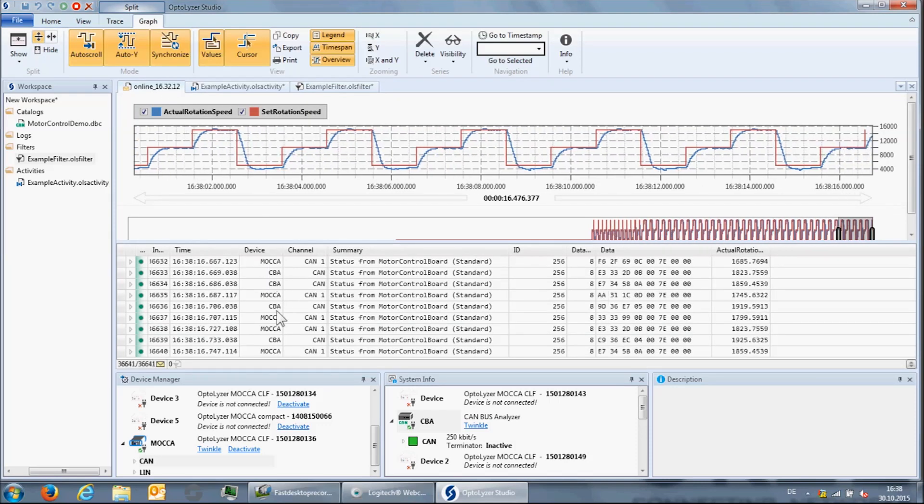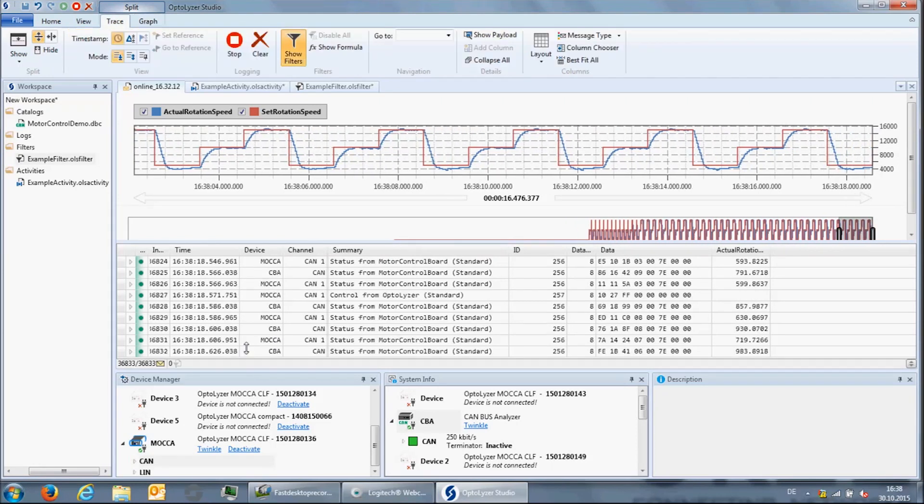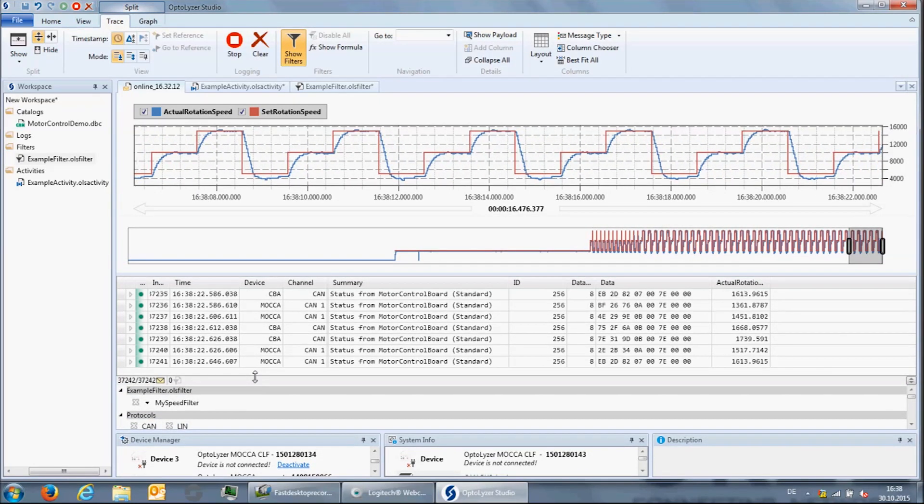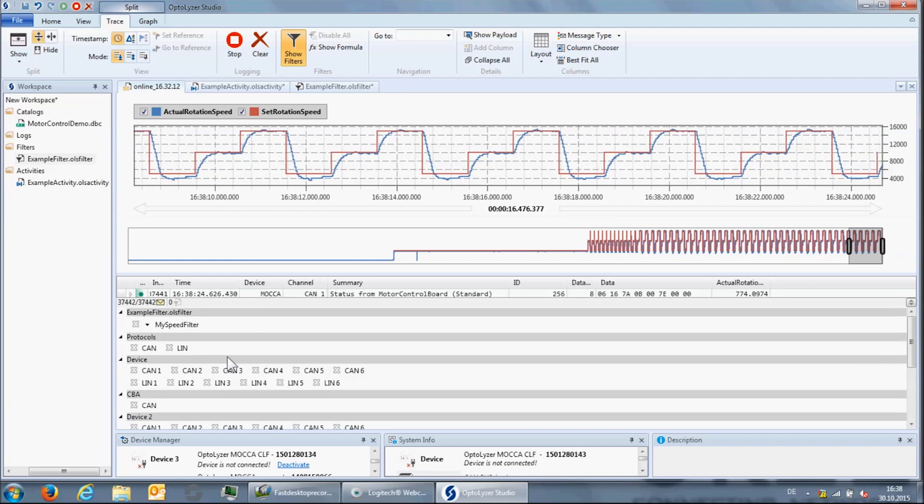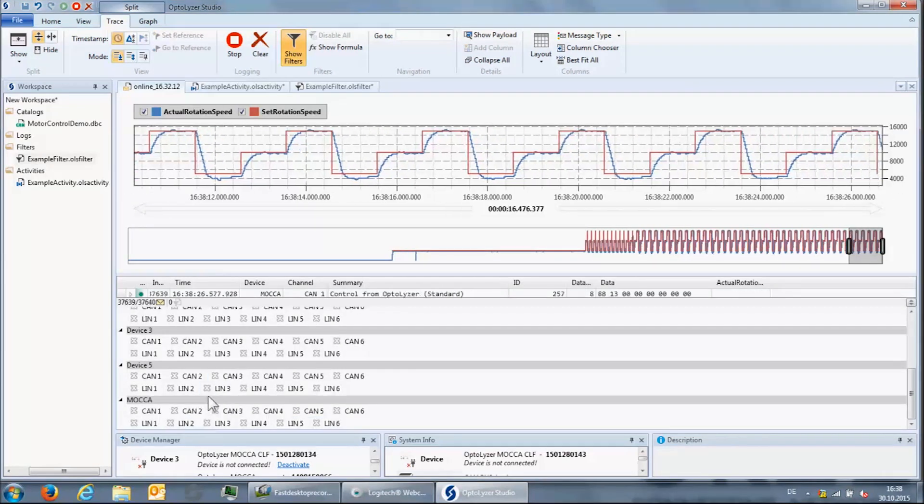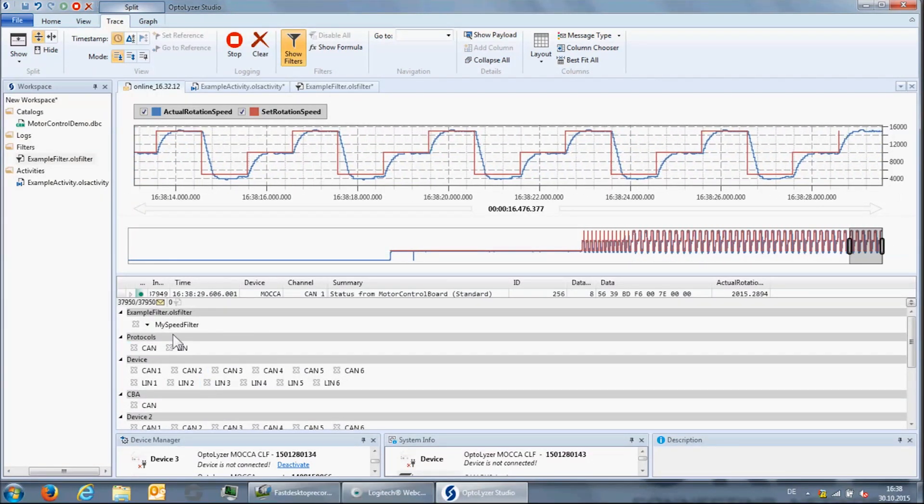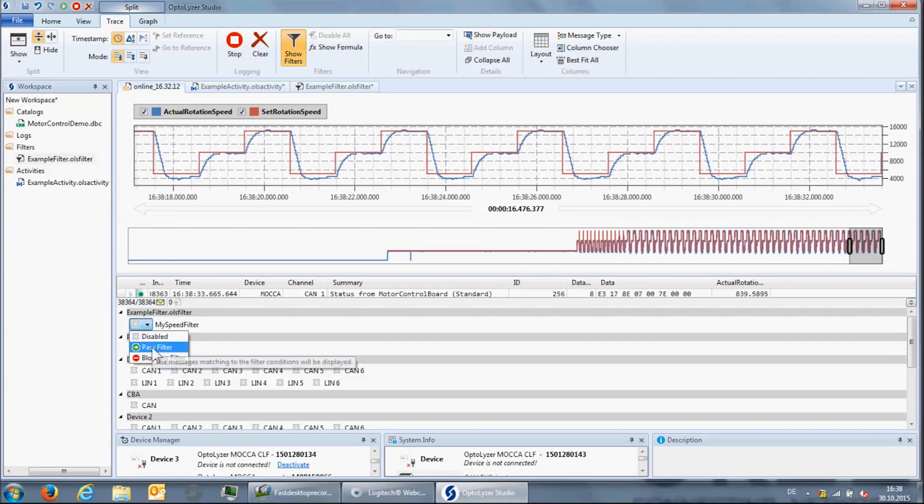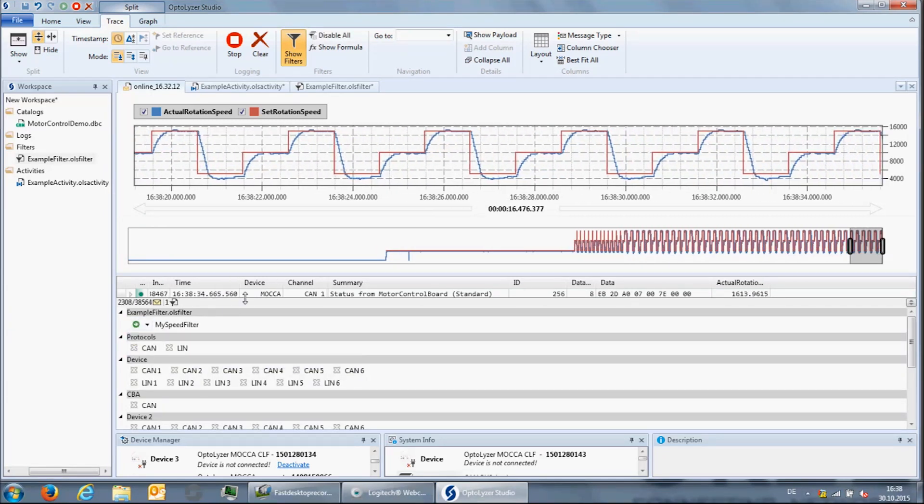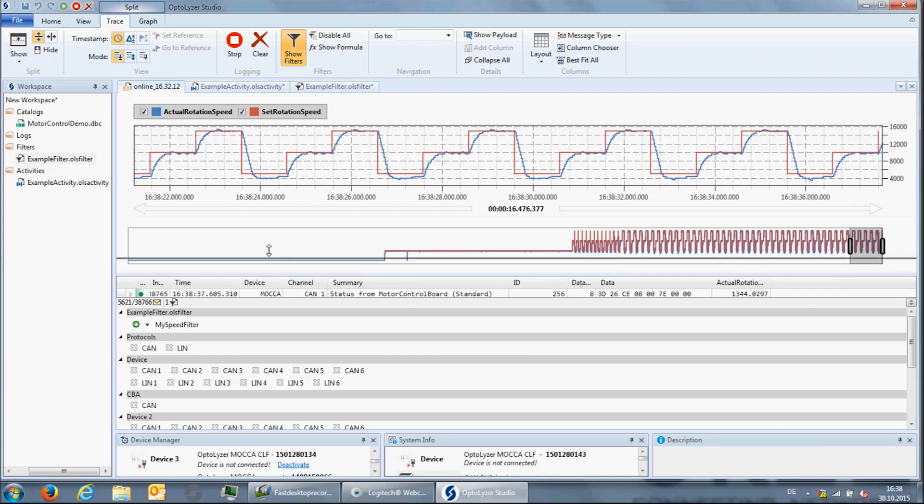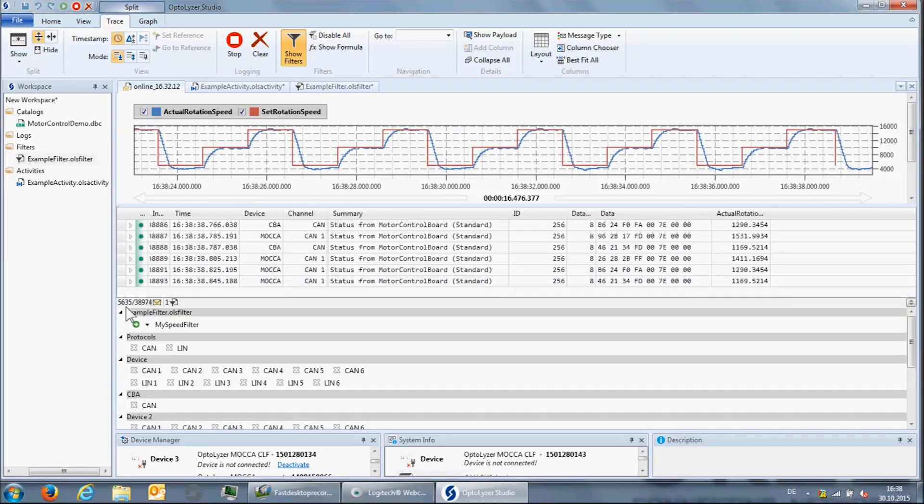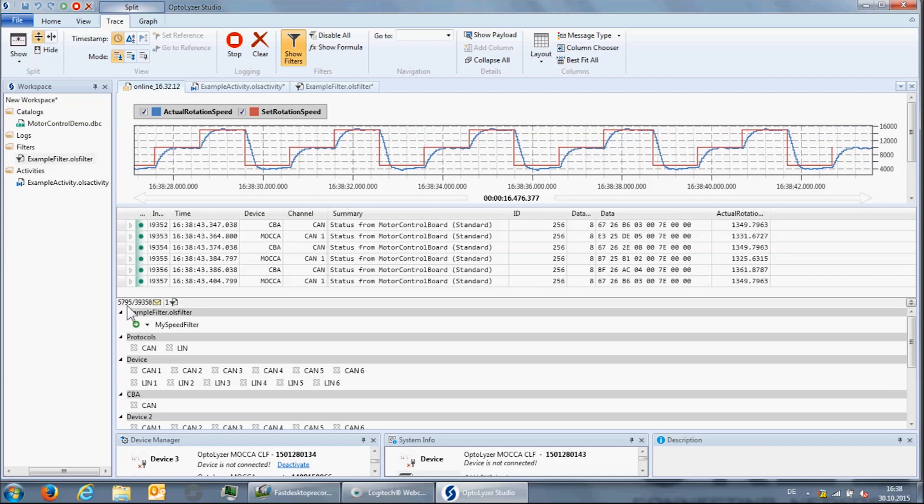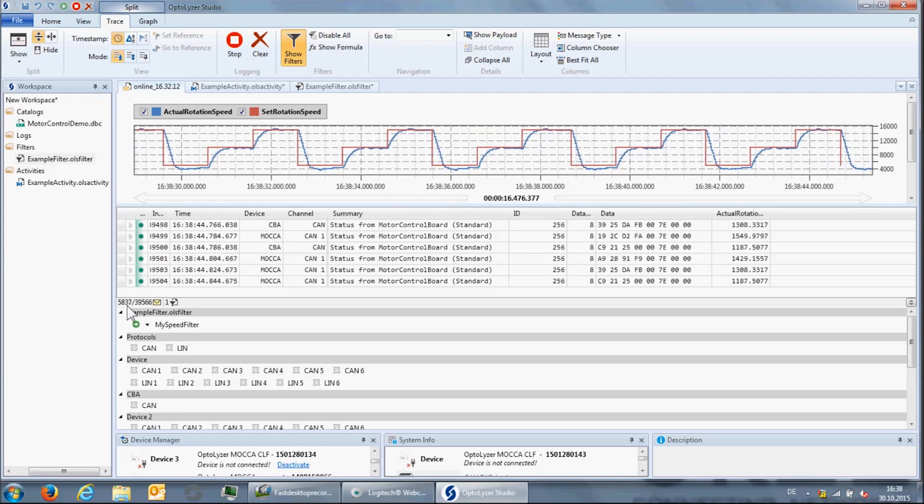In order to activate and use this filter, we go back to the trace view. Below the messages, there is a window that allows us to change the filter settings. When we activate the MySpeed filter, we can see that out of the 39,000 messages, 5,700 fulfill the requirements defined by the filter. However, it is clear that only status messages remain in the trace.